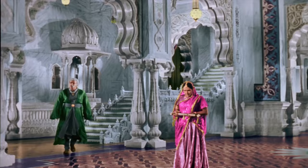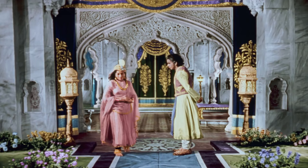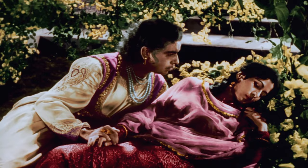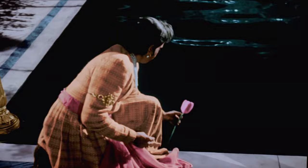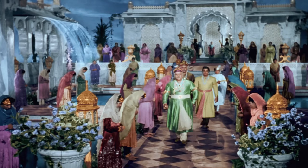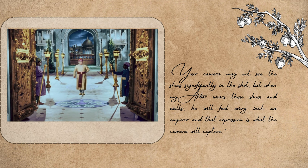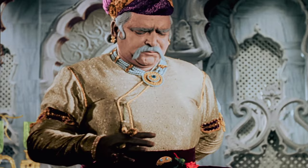In casual scenes, Akbar and Salim are also seen wearing a jacket over jama, which looks like a choga — a prevalent outerwear during that era. Salim also wears a short embroidered jacket, a departure from historical accuracy, and just like the women's jacket, it is inspired by Victorian-era waistcoats worn by British men — also called 'baskat.' While researching, I came across an anecdote about expensive pearl-laden shoes that Akbar was to wear in a scene, probably worth millions today. Kaasif was suggested to use imitations since the shoes wouldn't be prominently featured in close-ups. He responded: 'Your camera may not see the shoes significantly in the shot, but when my Akbar wears those shoes and walks, he will feel every inch an emperor, and that expression is what the camera will capture.' This attention to detail has made these costumes iconic and memorable.